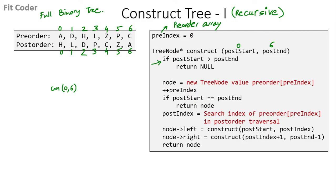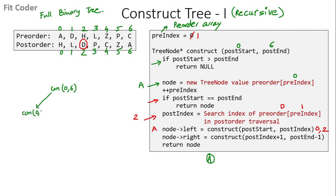We check if start is greater than end. Then we create a new tree node with the value at the 0th index of the pre-order array, which is A — creating the root node. We then increment pre-index to 1. We check if start equals end. Then we search for the first index of the pre-order array, which is B (the child of A, which is D), in the post-order traversal. The index of D is 2, so post-index becomes 2. For the left of A, we call construct(0, 2).